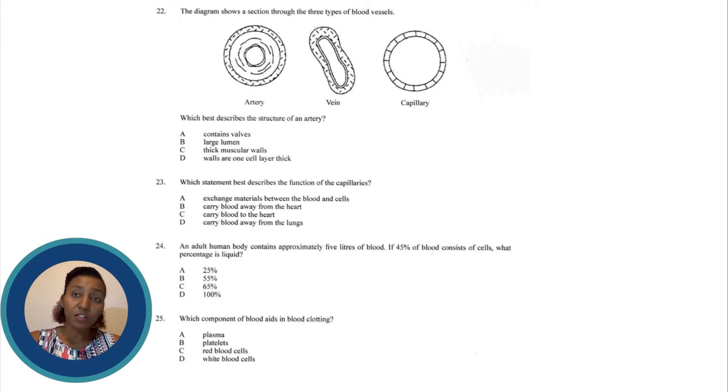B says large lumen. Well the lumen is this section right here in the middle. And we can see from the diagrams that the artery does not have a large lumen.